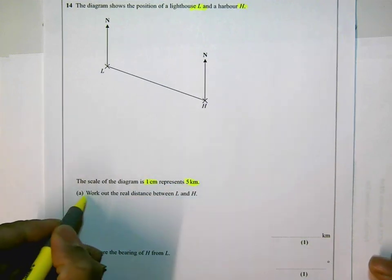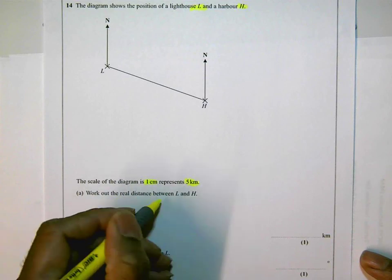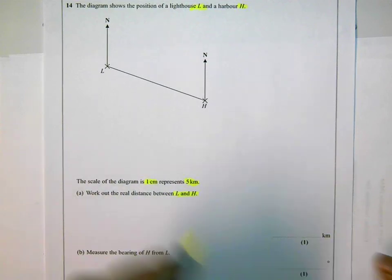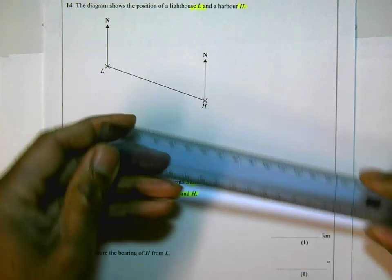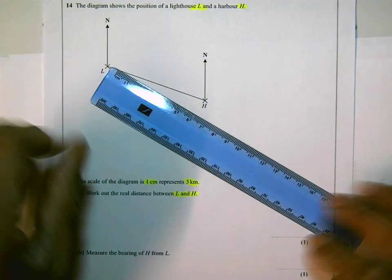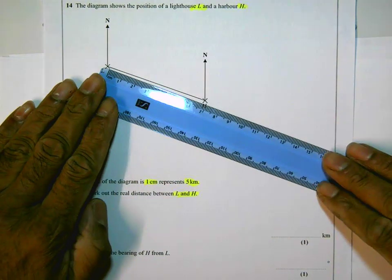Work out the real distance between L and H. So the real distance between L and H, I think this is pretty straightforward. I just need to get my ruler and measure the distance between L and H.